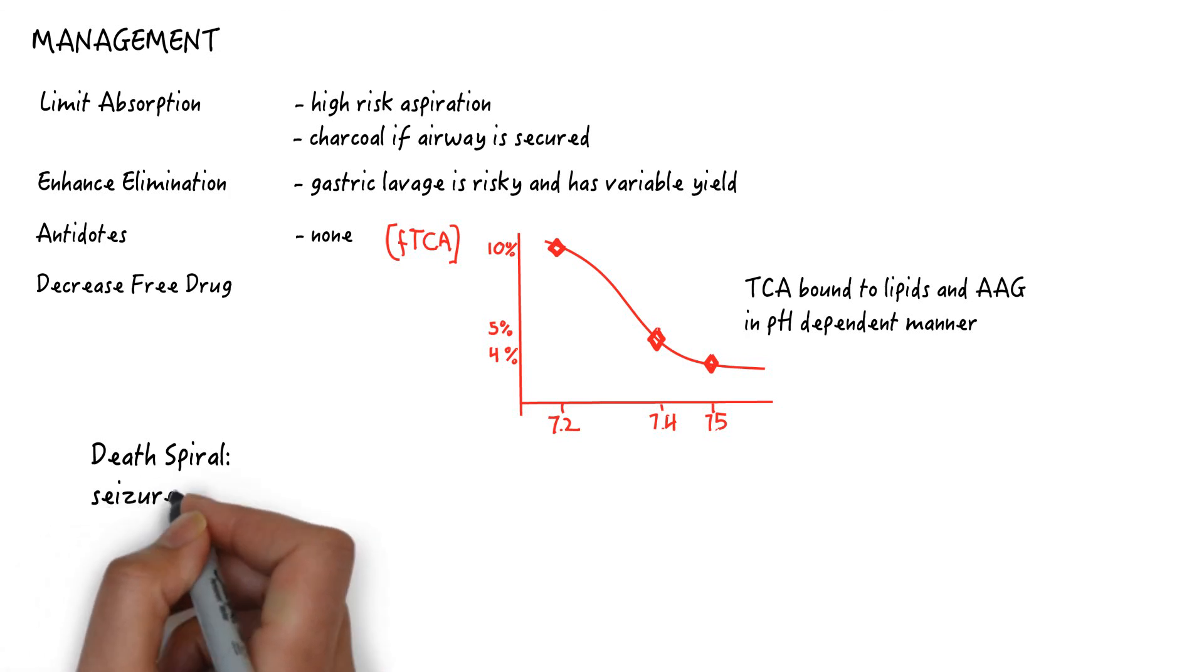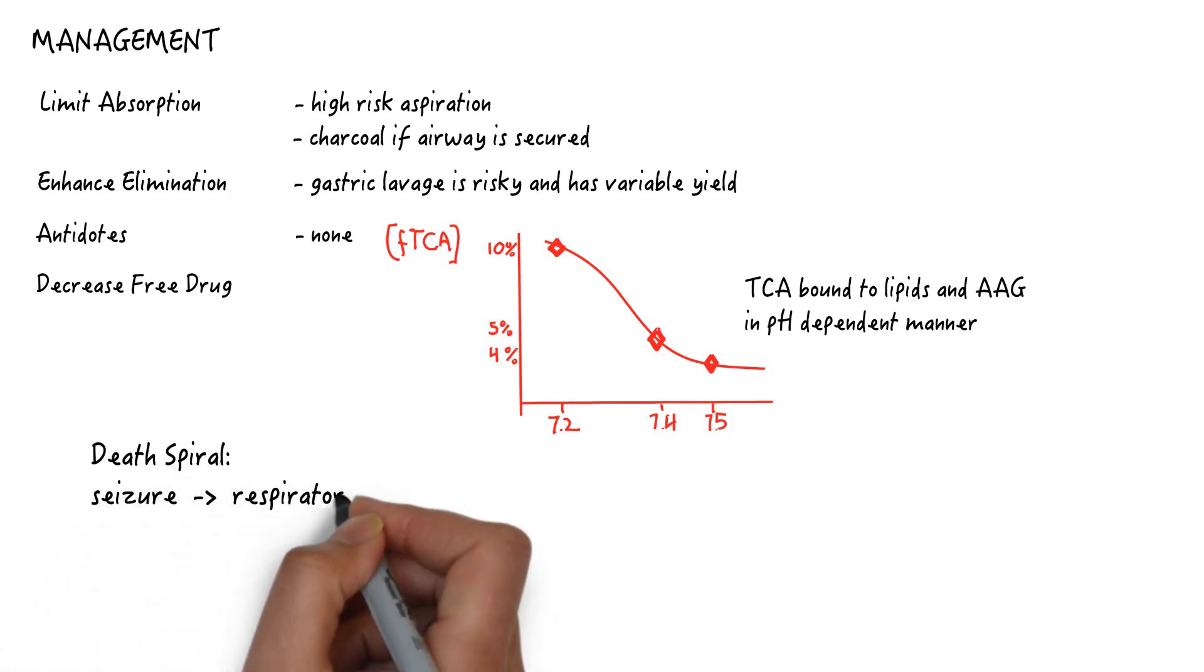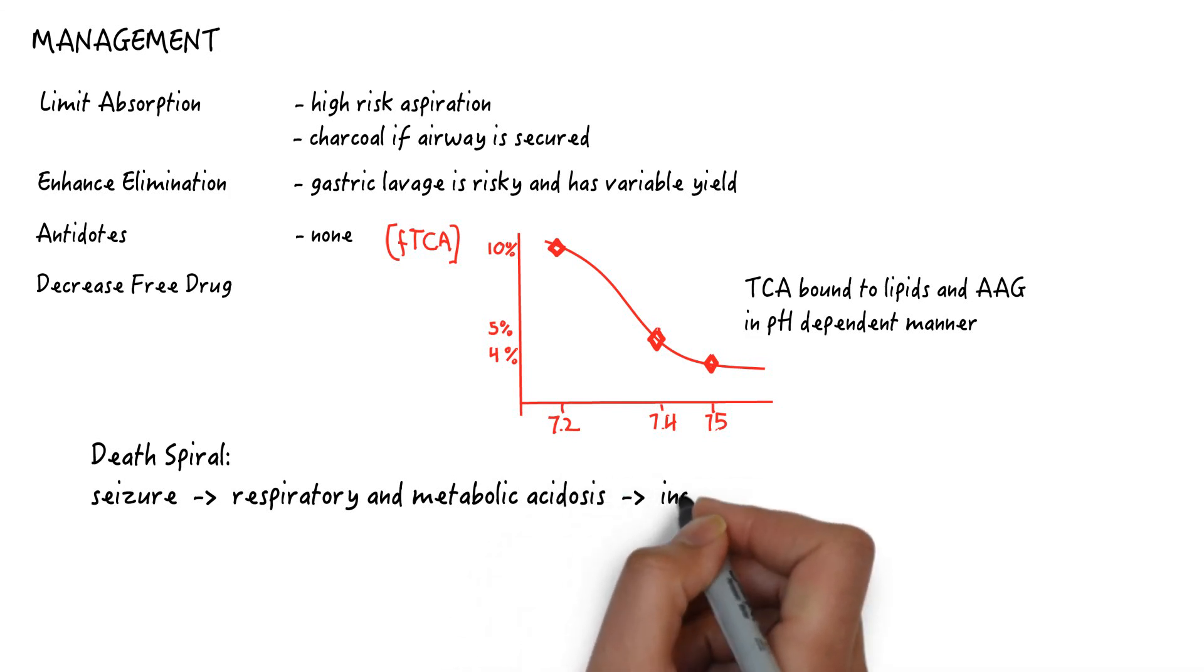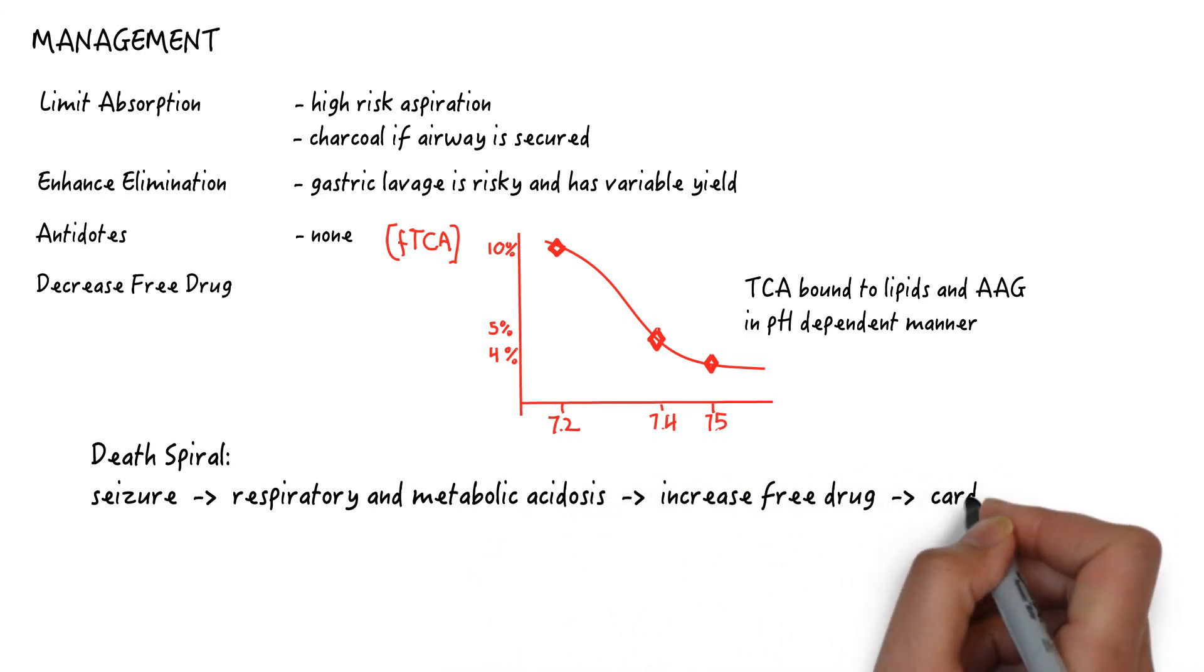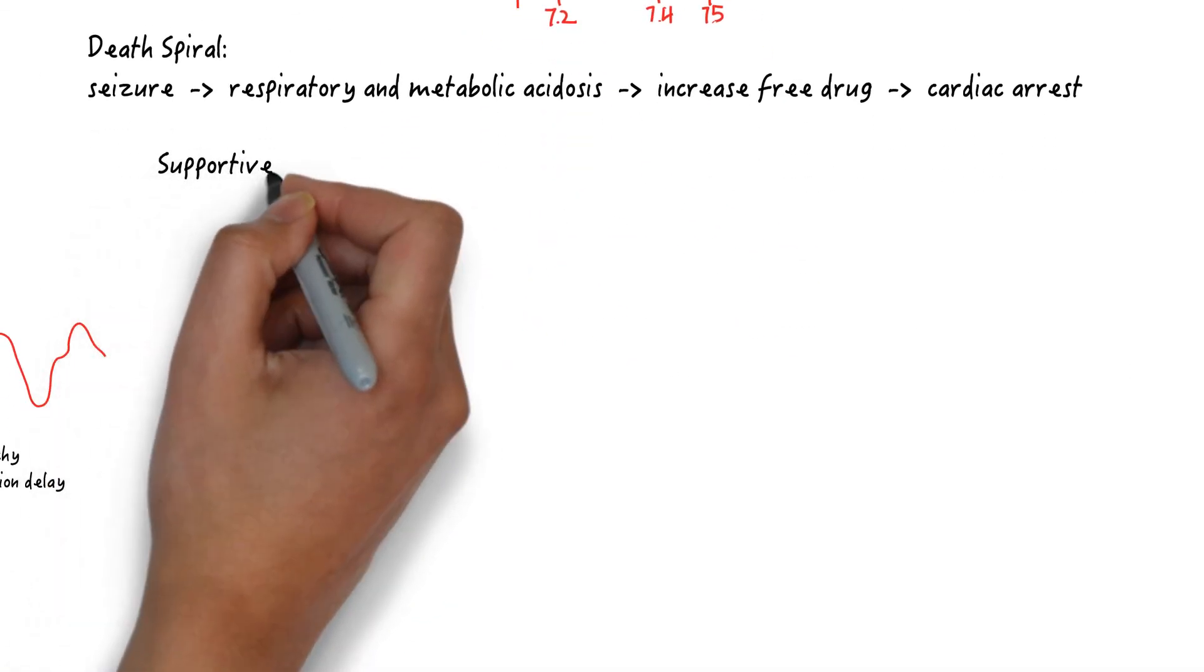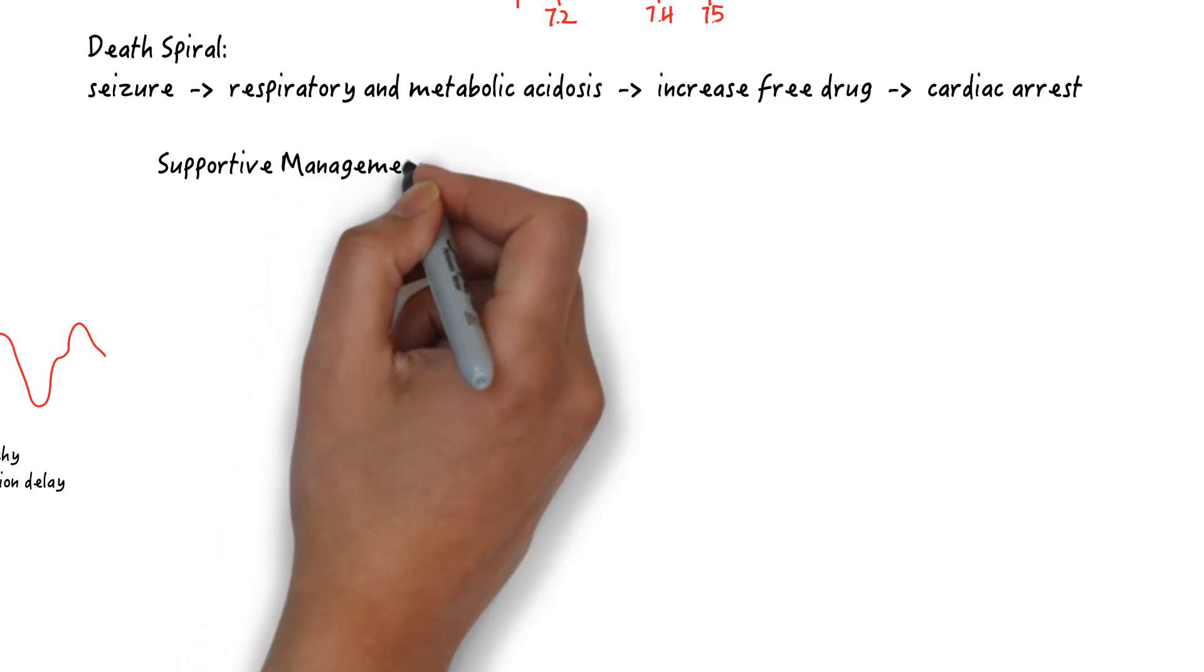With somnolence, hypopnea, and seizures, there is respiratory and metabolic acidosis. This can easily more than double the amount of free drug and increase the potency of toxicity on the cardiovascular system to create wide complex tachycardia and cardiac arrest. In other words, C's and code.